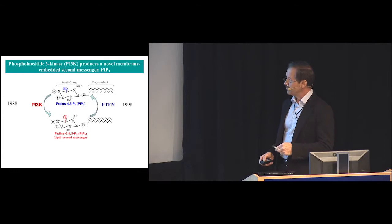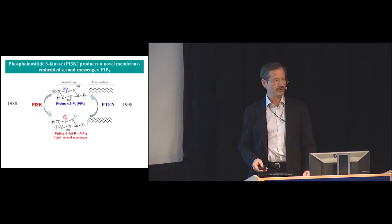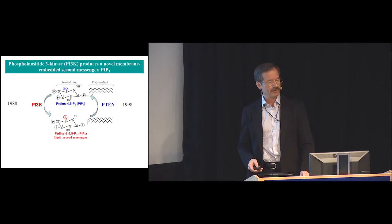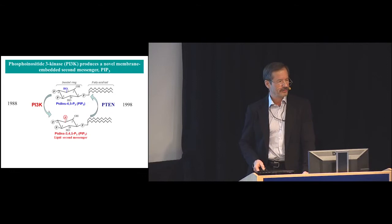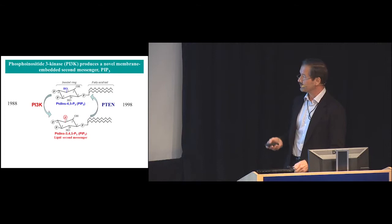But an observation that we made that the lipid product of the PI3 kinase migrated about a millimeter different on thin layer from that of PI4 kinase led us to discover that it was actually putting in a phosphate at a position not previously known to exist in nature, the three position. This led to discovery ultimately of this triply phosphorylated lipid PI345P3 that is the second messenger that drives cell growth signaling.